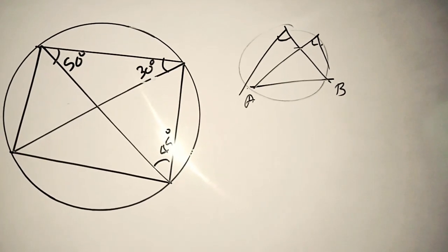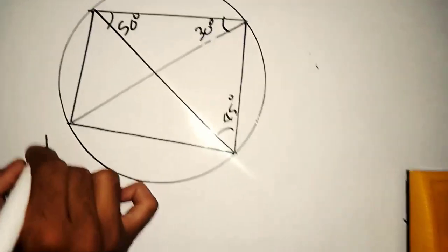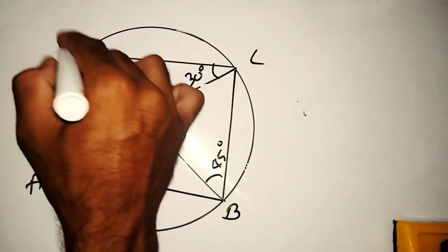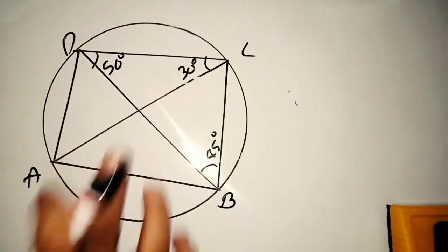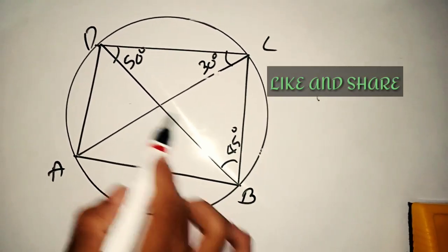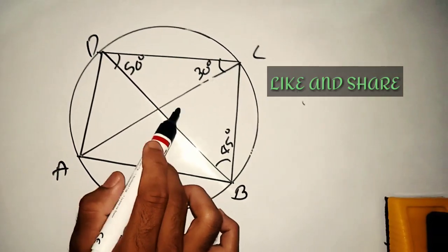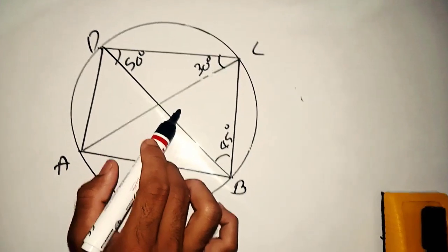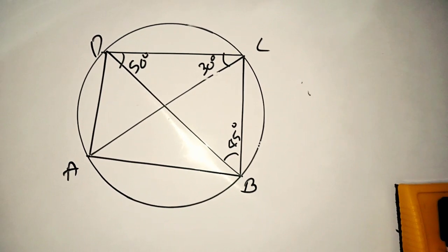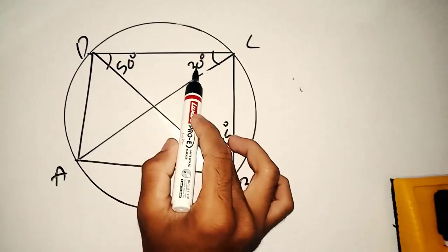Krithi is one of the first ones. I have a name A, B, C, D. This is one of the first ones. You can see one of the first ones. I am also one of the first ones. This is 30 degrees.